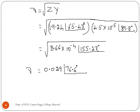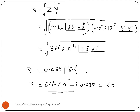The propagation constant in polar form is 0.029 angle 76.6°. Converting to rectangular form: 6.72×10⁻³ plus j·0.028, which is in the form alpha plus j·beta. Therefore alpha equals 6.72×10⁻³ and beta equals 0.028.